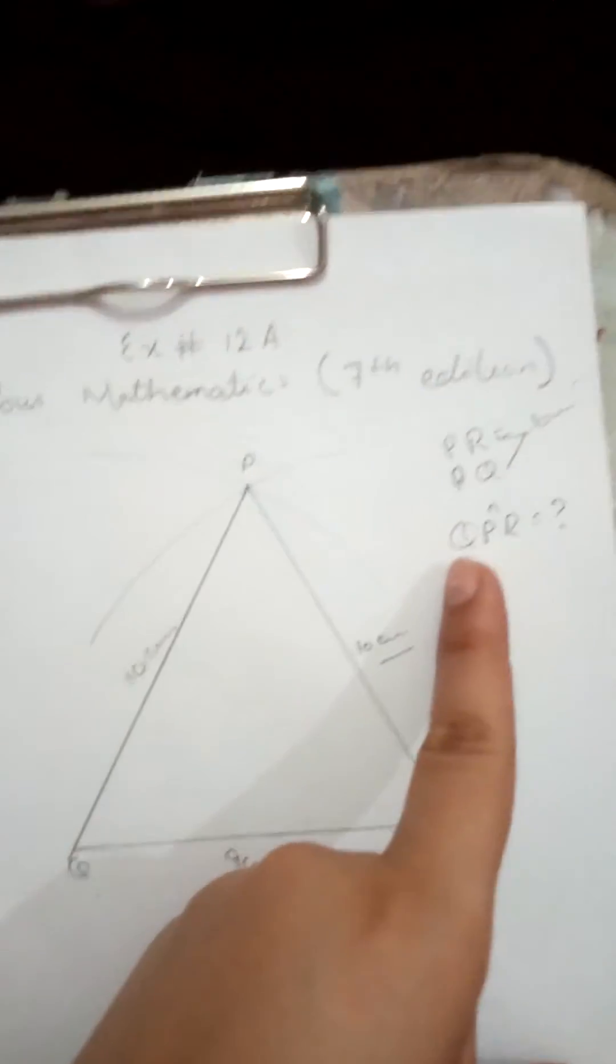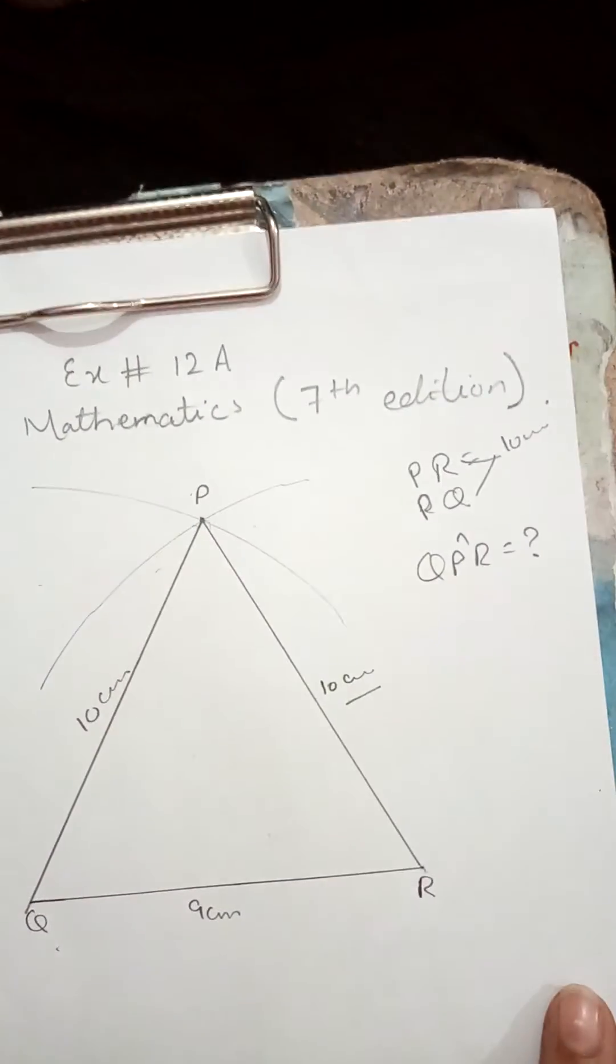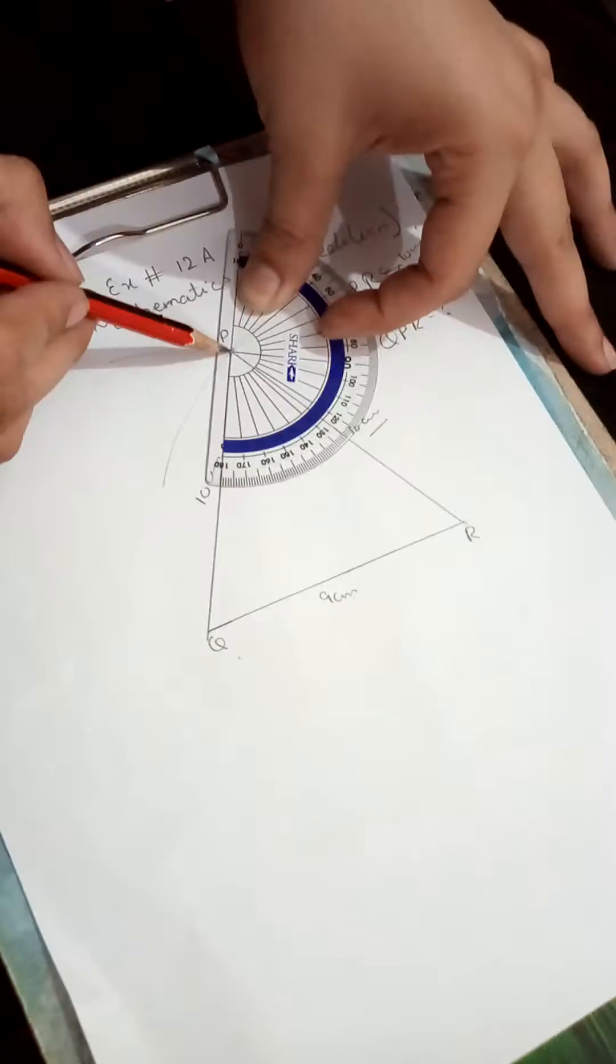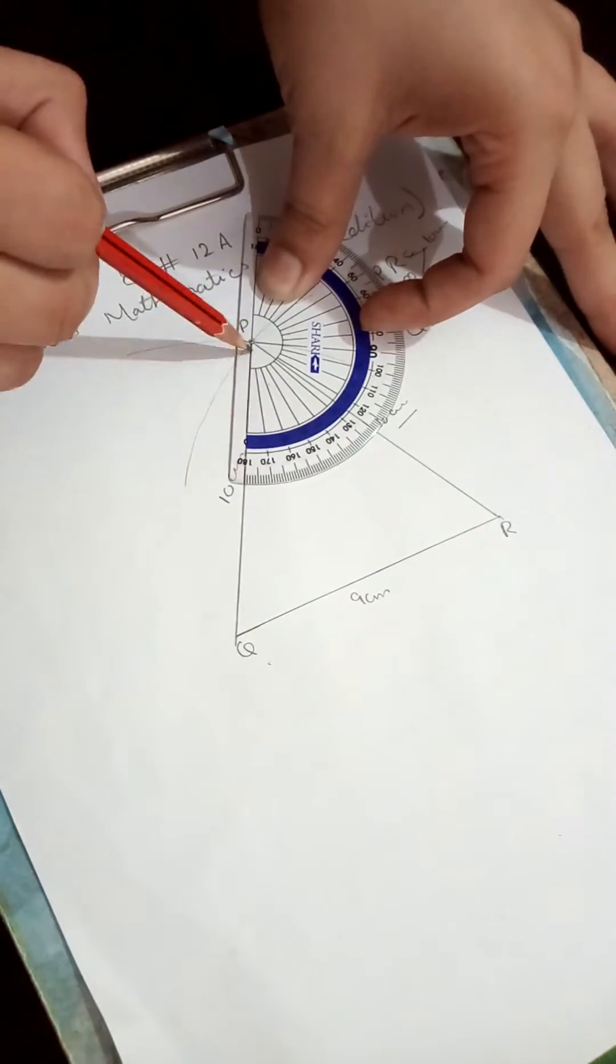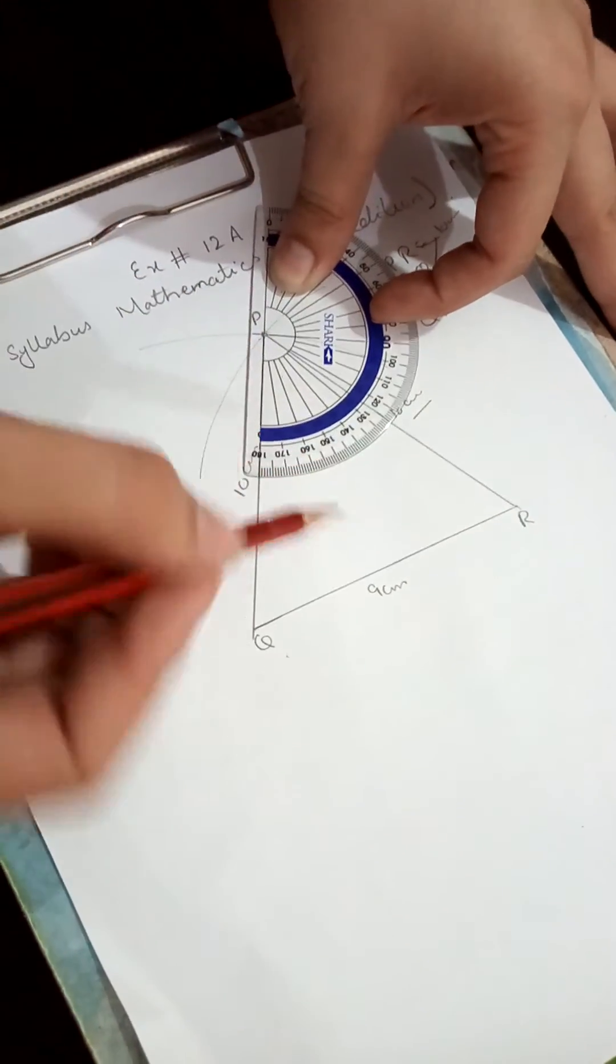So rotate your clipboard and take PQ as the baseline. Measure angle P. The line of your protractor is on the line segment PQ at P, and measure the angle. That is 54 degrees, so angle QPR is 54 degrees.